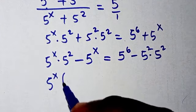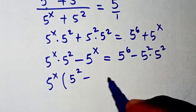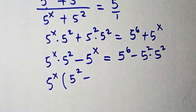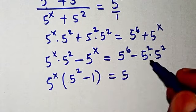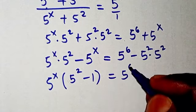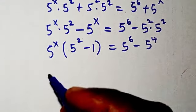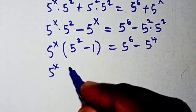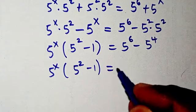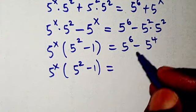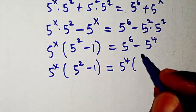Now 5 to the power of x is common, so we factorize it out: 5 to the power of x times (5 to the power of 2 minus 1) equals 5 to power of 6 minus 5 to power of 4. So now we see that 5 to power of x equals, and we factorize 5 to power of 4 out.